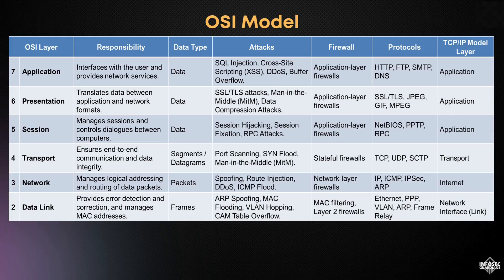Layer 2 firewalls and MAC filtering are common defenses here, with Ethernet, PPP, VLAN, and frame relay being the primary protocols. It corresponds to the network interface, or link layer, in the TCP/IP model.